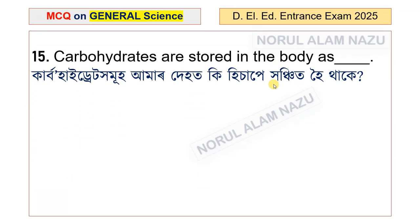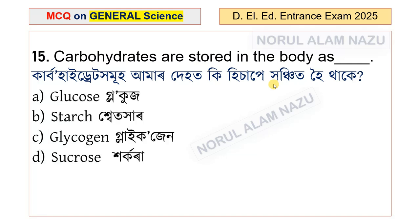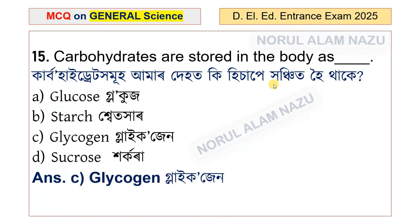Question 15: Carbohydrates are stored in the body as — glucose, sucrose, or glycogen. The answer is Option C — glycogen.